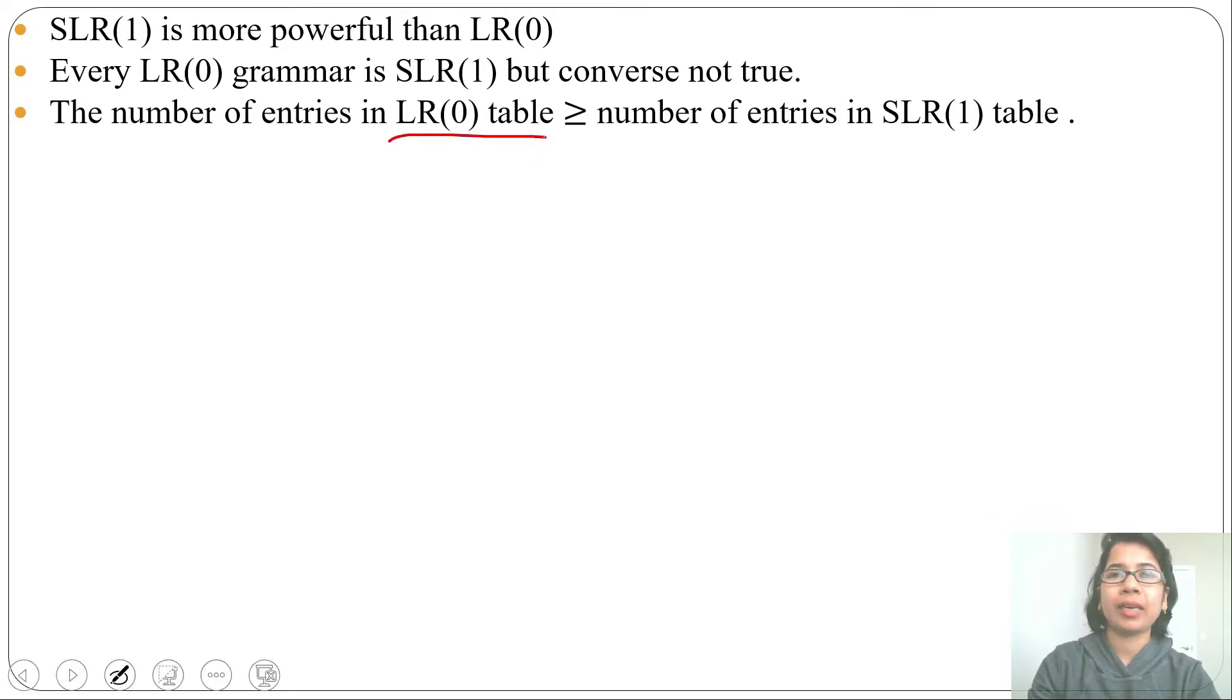In LR0 we are writing reduction in all columns of action part, whereas in SLR1 we are writing reduction in follow of LHS variable. So reduction entries are reducing in SLR1. That's why LR0 table entries are more than SLR1.